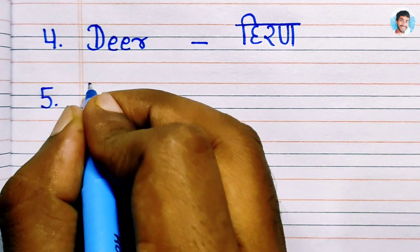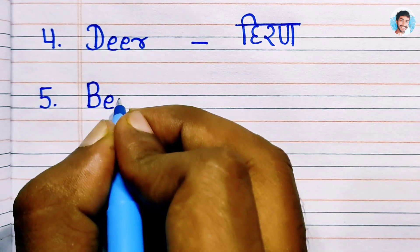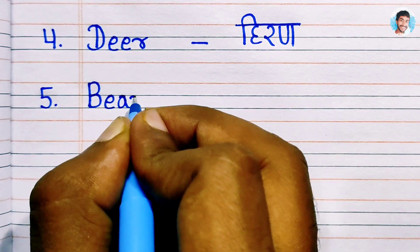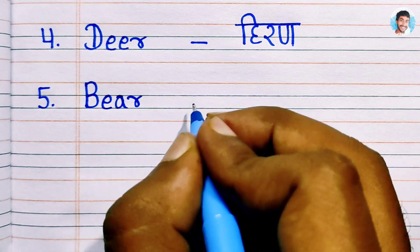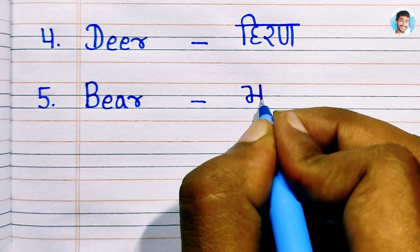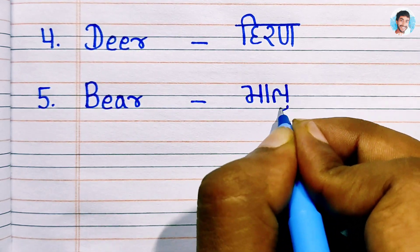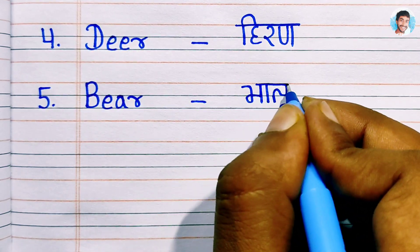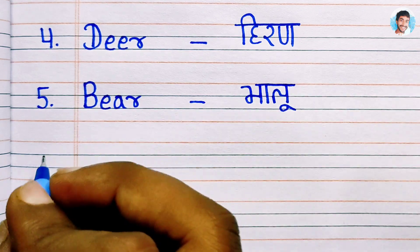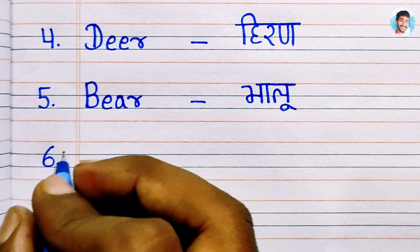Number 5: Bear. B.E.A.R. Bear means bhaloo.